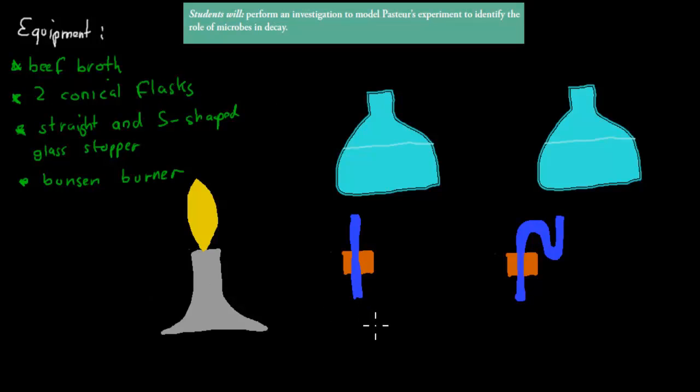For his experiment, the equipment would have been beef broth, which is just your soup, like a beef cube - beef flavoring cube - that you mix with water. This is food for any microorganisms, especially bacteria. You would have had two identical conical flasks. The only difference is that you had a straight and an S-shaped glass stopper. You would have also had a Bunsen burner as well.